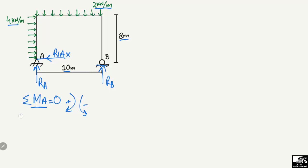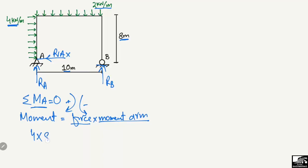We know that moment equals force times moment arm. Starting with the 4 kilonewton per meter lateral load on the column: 4 kilonewton per meter multiplied by 8 meters gives 32 kilonewton. This converts the distributed load into a concentrated point load of 32 kilonewton acting at the center of the column.